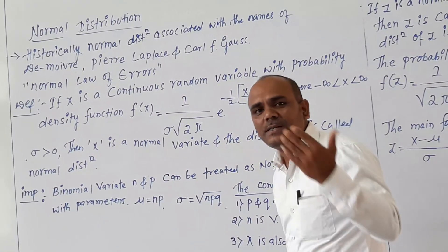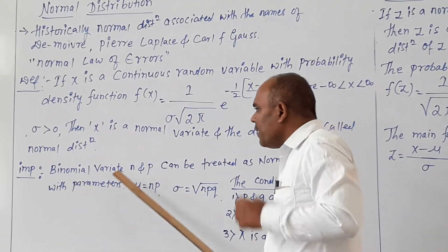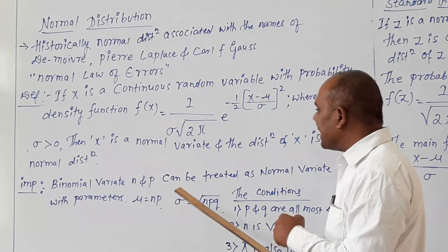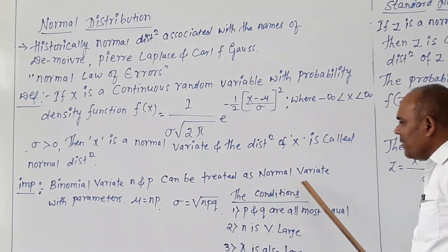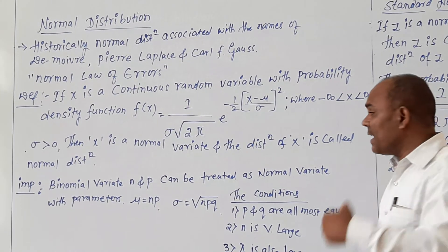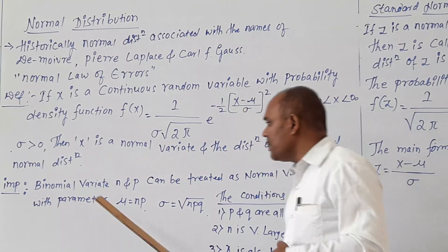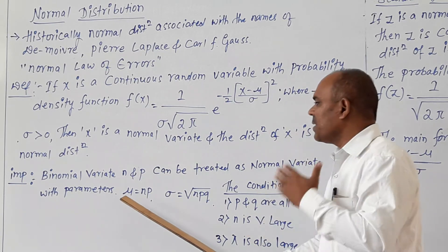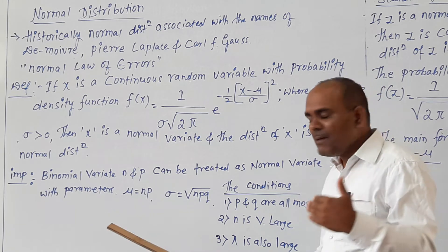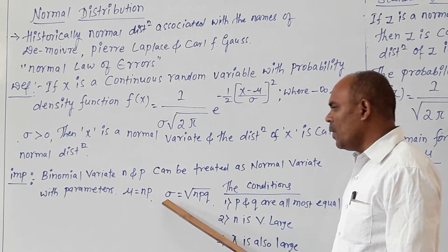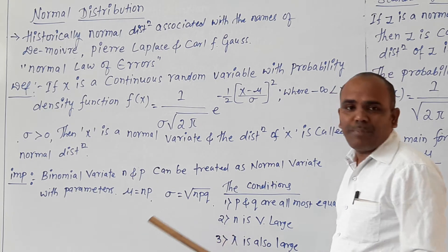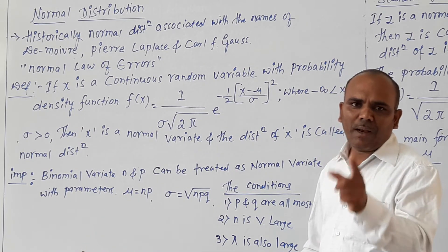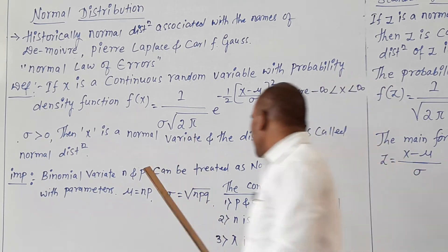There are some conditions. A Binomial variable with parameters n and p can be treated as a Normal variable with parameters mu equals to np, where mu is the mean in Normal distribution, and sigma equals to the square root of npq, which is the standard deviation. So mu and sigma are the parameters for calculation of a Normal distribution.